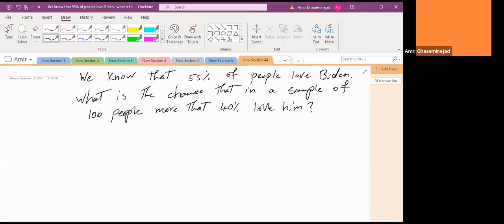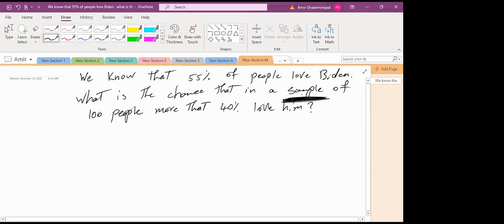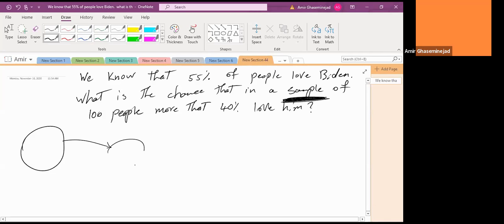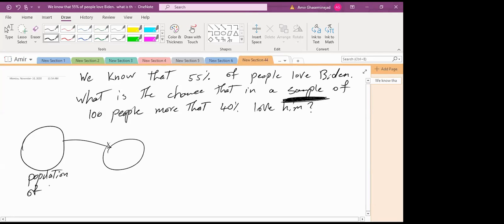Notice that because there is a word sample here, you have to draw two circles. If there is a sample, there is definitely a population. So then you think about the population. This is population of people.